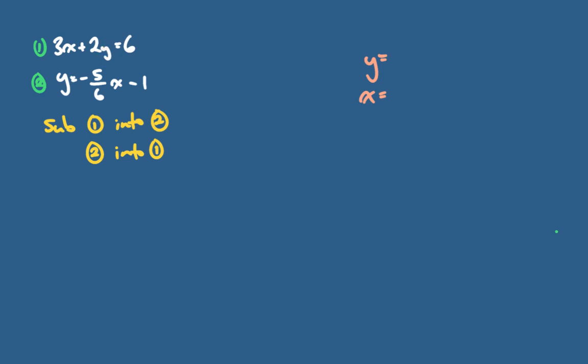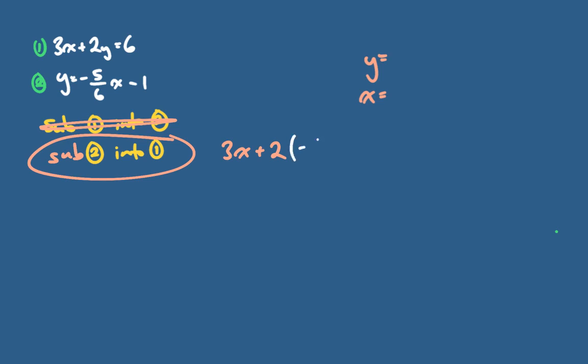I'm going to communicate that I'm subbing 2 into 1. I could sub 1 into 2, but it would take some rearranging first. So I'm going to write equation 1, but where there's a y, I'm going to substitute in negative 5/6 x minus 1, and then continue on with the equation. Now I have an equation with only x's in it and I can solve.